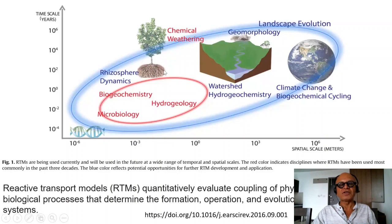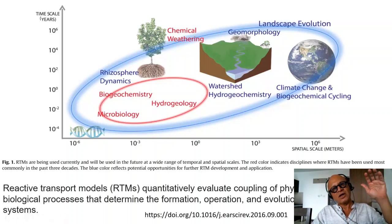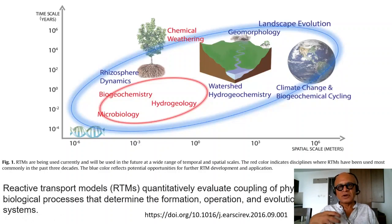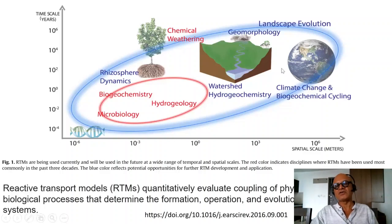Chemical weathering is a broad term where even the roots, for example, can begin to produce carbonic acid on the surface of rocks, slowly degrading them and increasing their weatherability. Rhizosphere dynamics, which we will see in a minute, is where roots are releasing various chemicals into the soil, altering the soil chemistry. Watershed hydrogeochemistry and geomorphology are also involved, along with tectonic processes and uplifts.